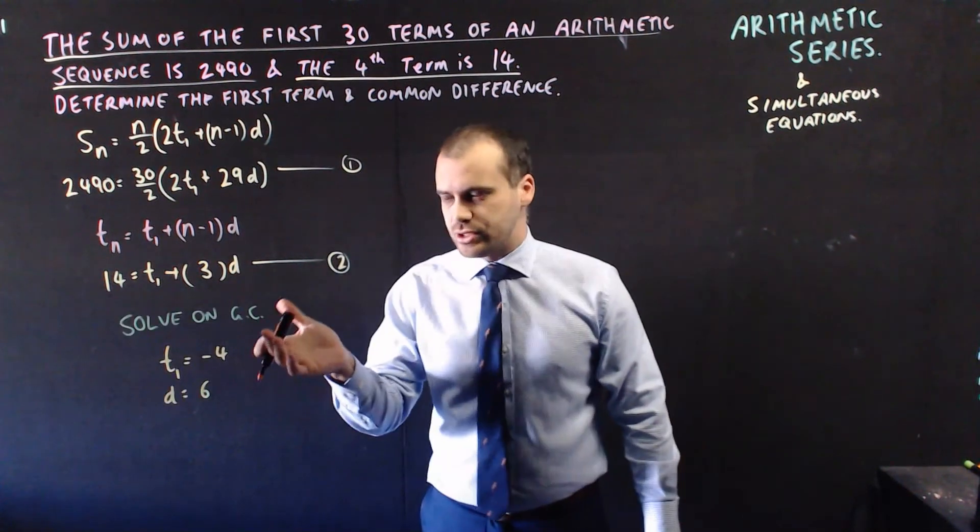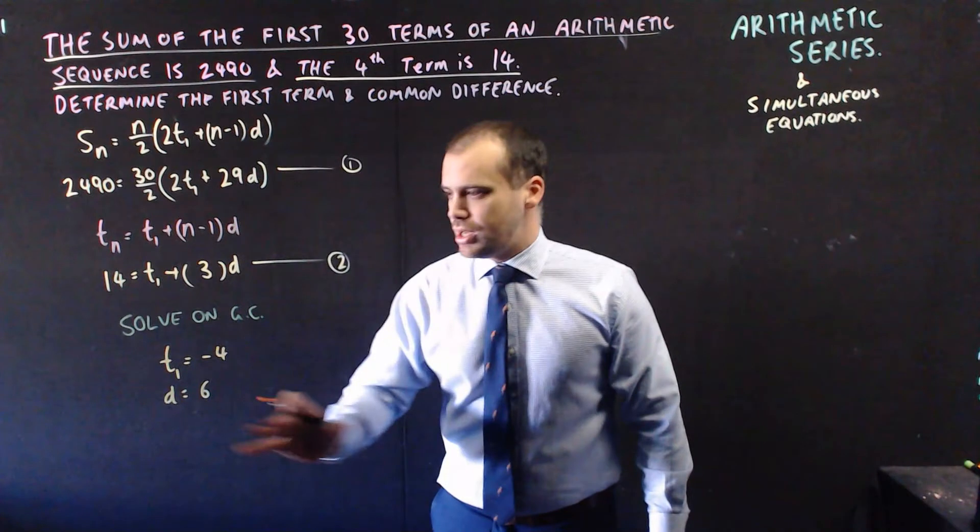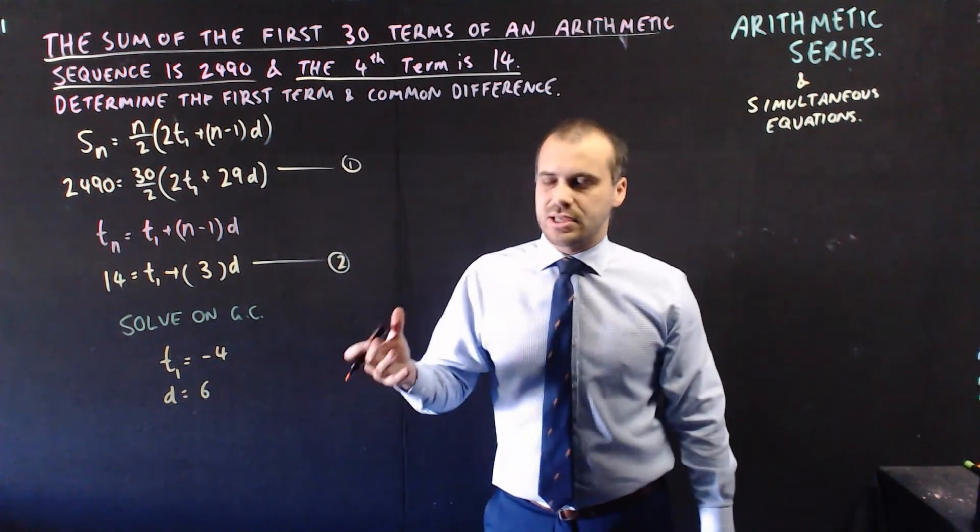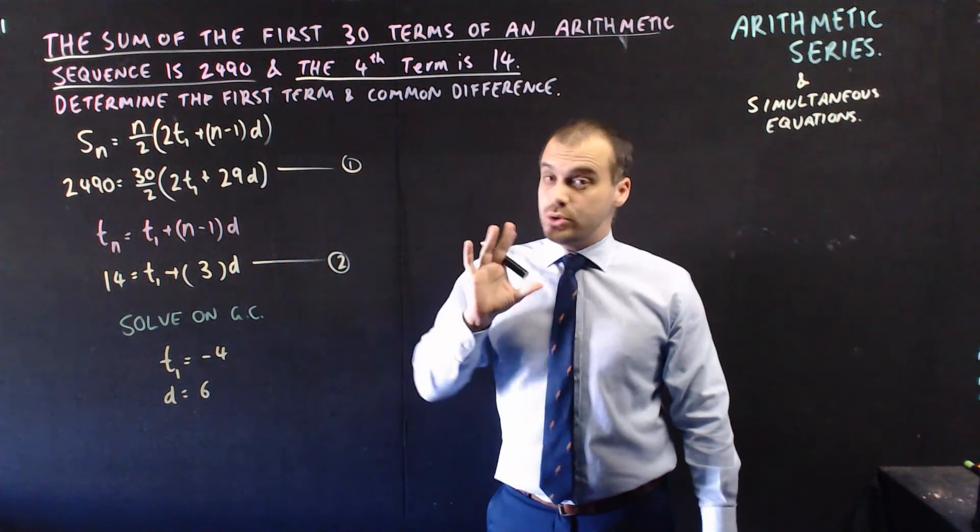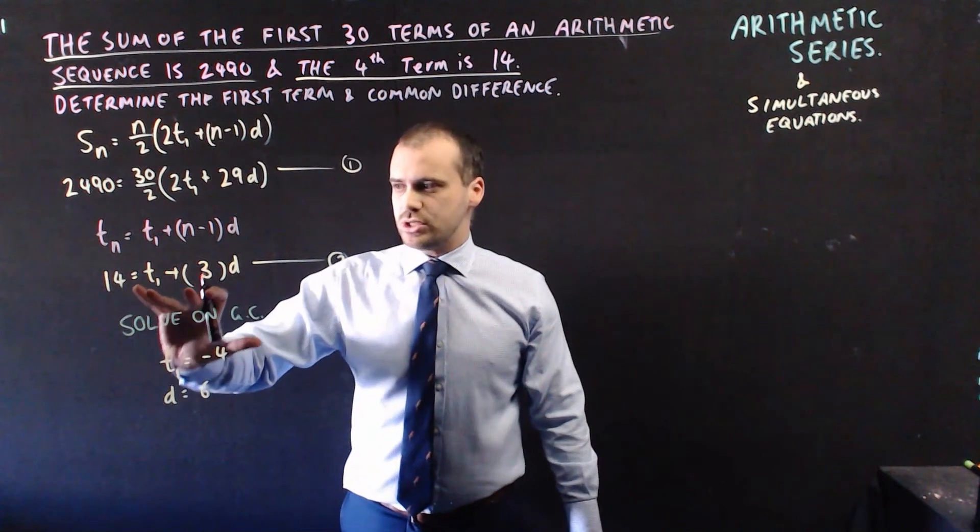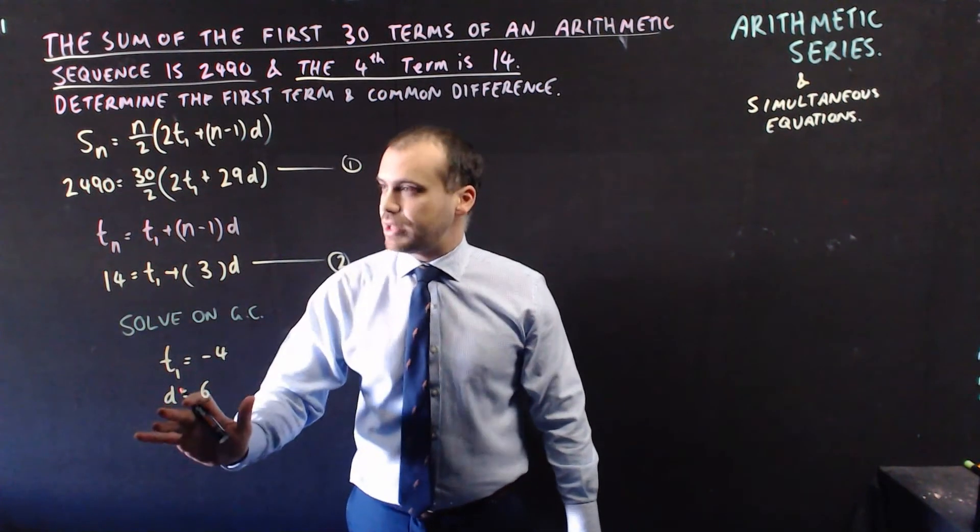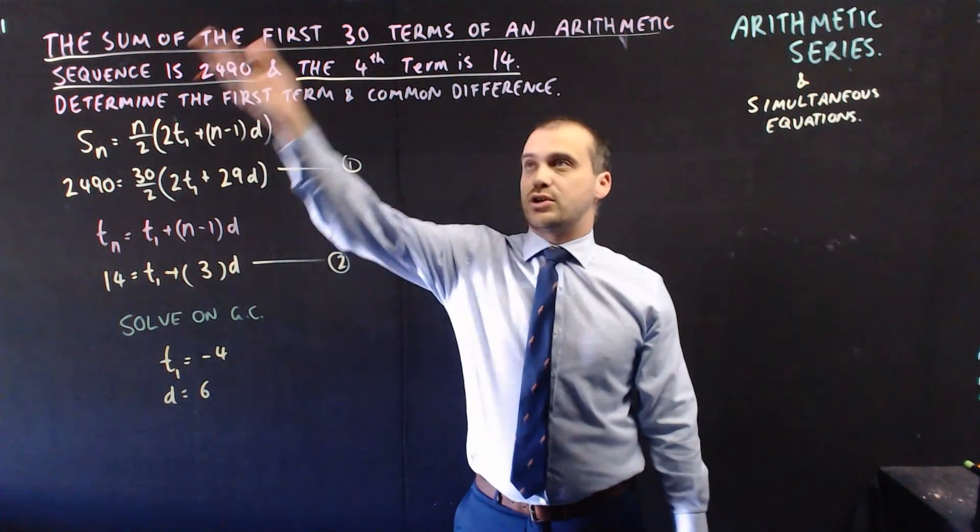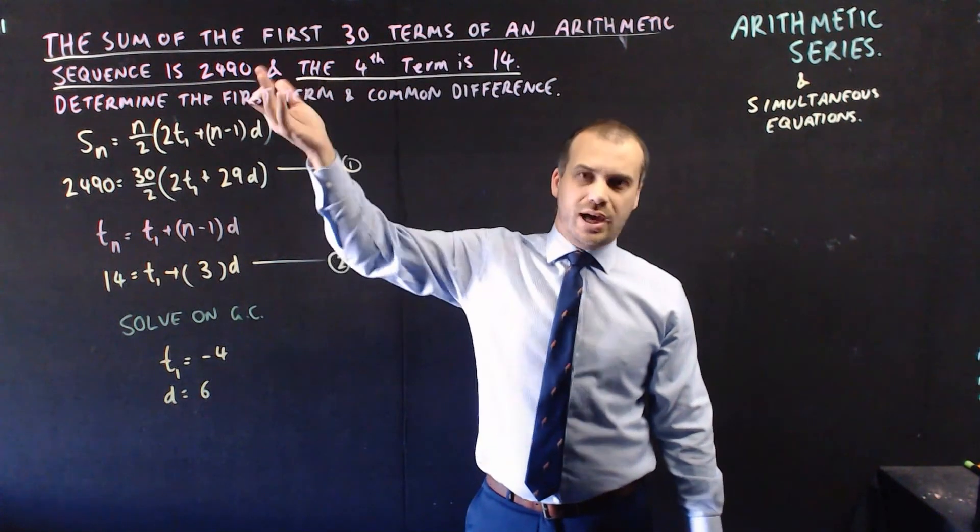So using my graphics calculator to solve those two simultaneous equations, I get term 1 equals negative 4, and d equals 6. Now, of course, you can check that, right? Because you can put those values back into these equations, make sure they work. Make sure it's giving you the information you initially had in the question.